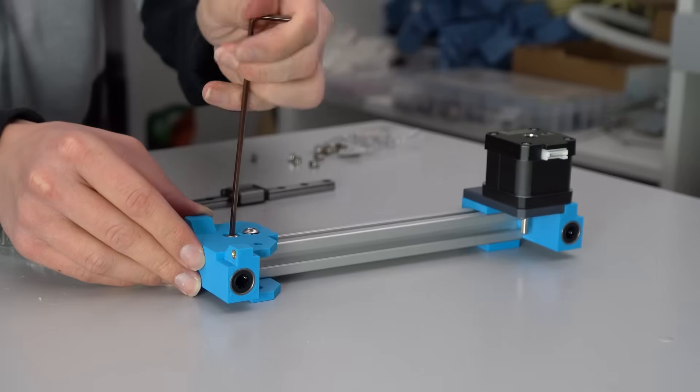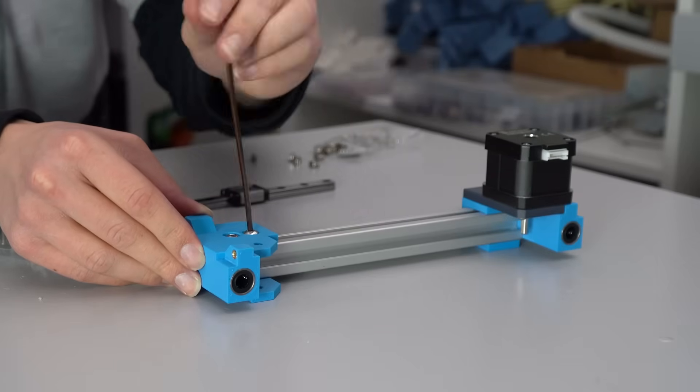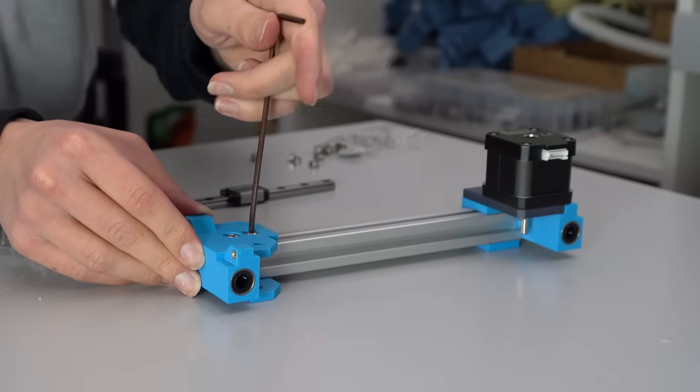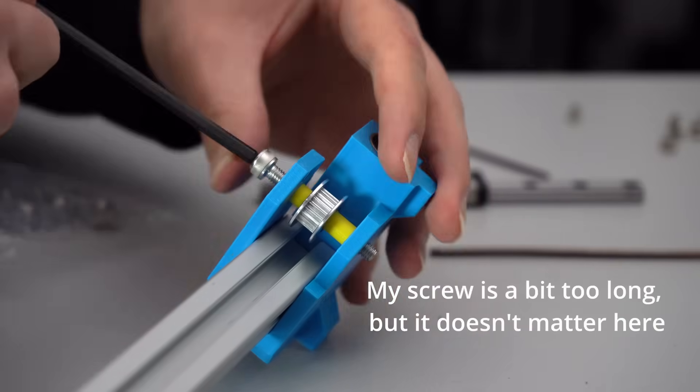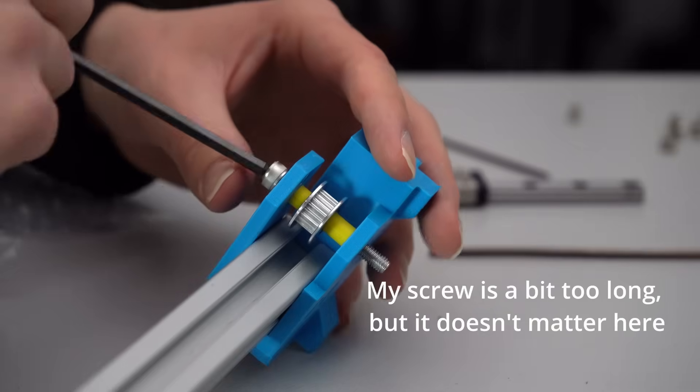The idler side of the X-axis is installed exactly the same way, with the T-nuts loaded onto screws, and the whole assembly slipped onto the 2020. The idler is attached via one long M5 screw, and a couple of printed spacers to keep it aligned with the rest of the belt path.